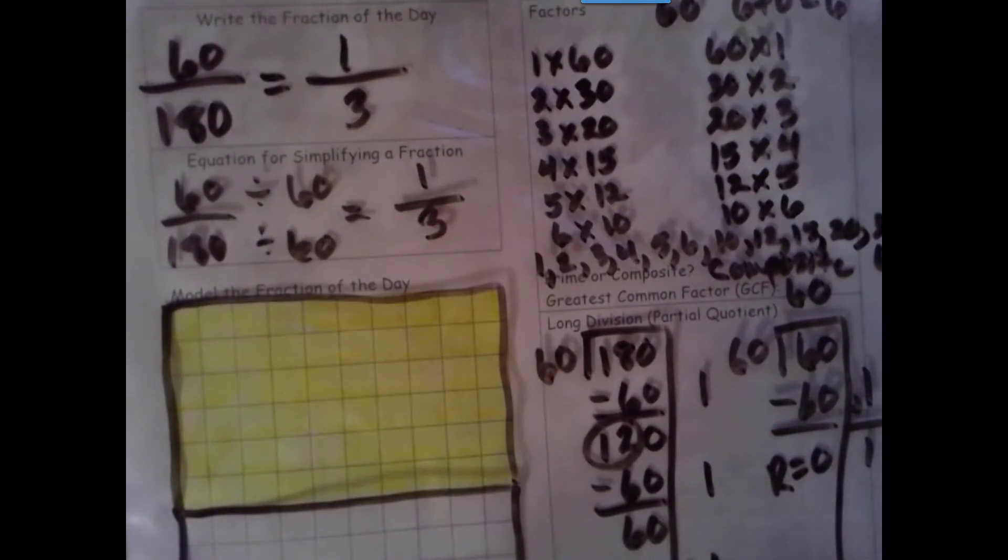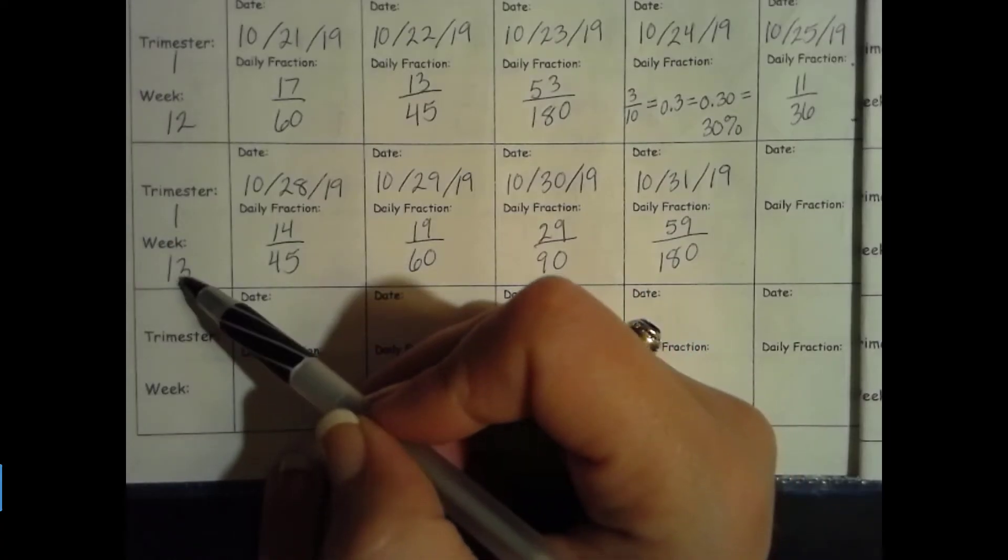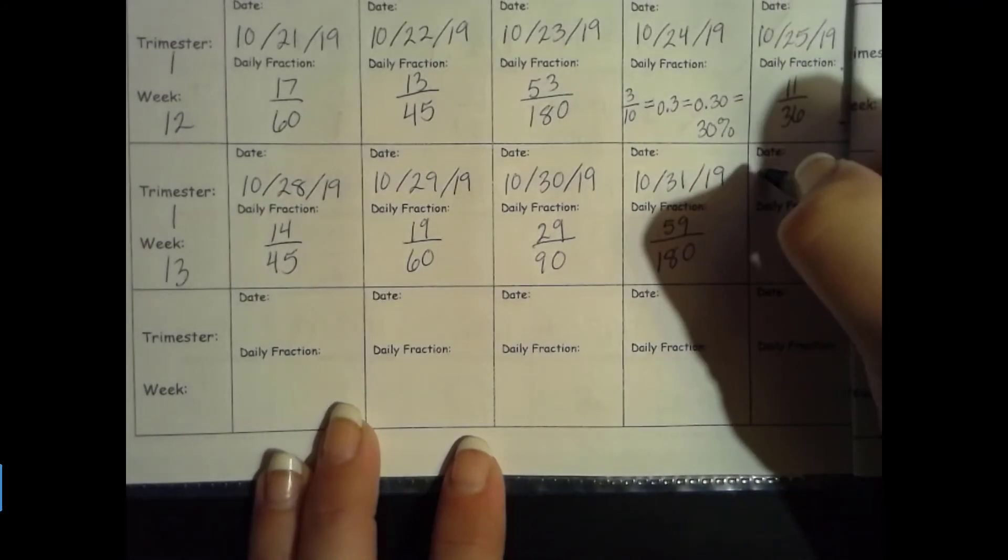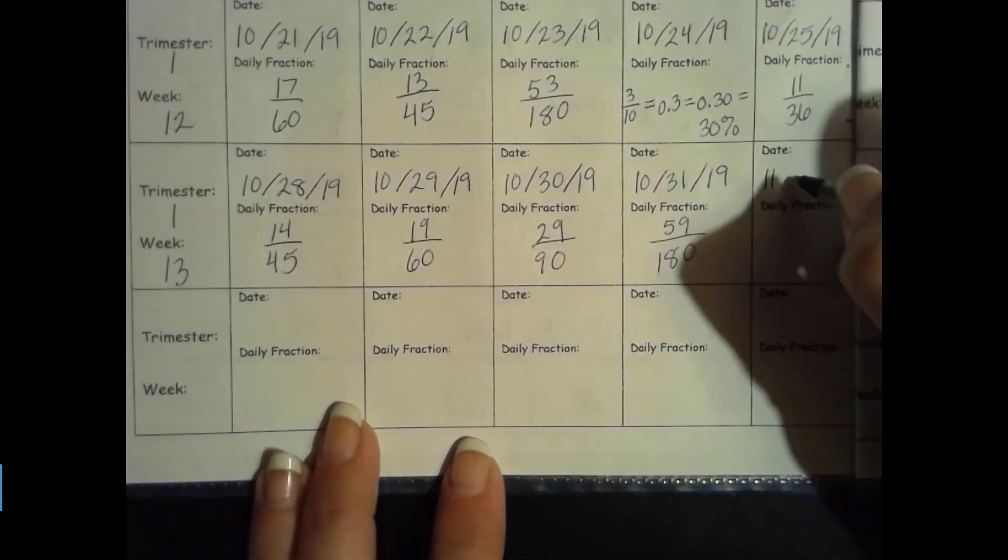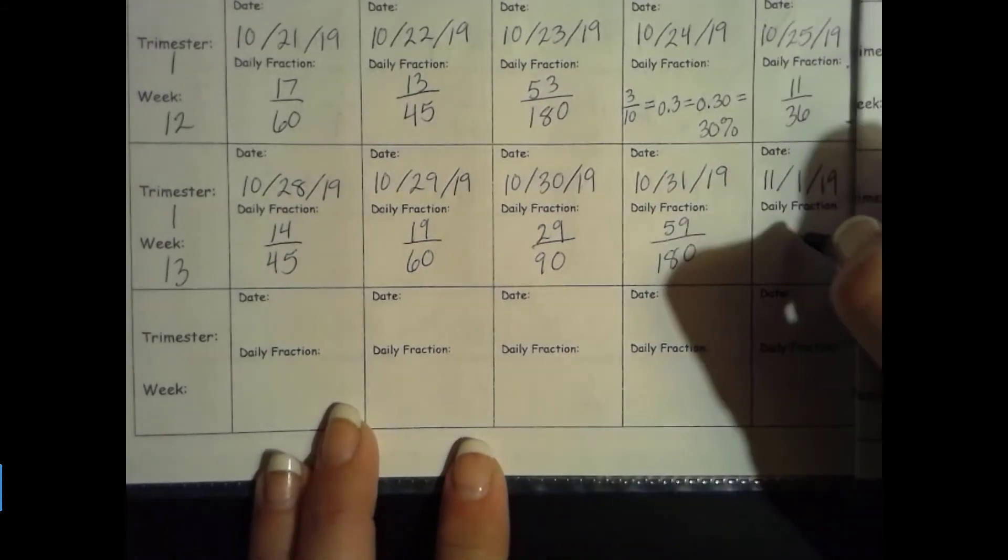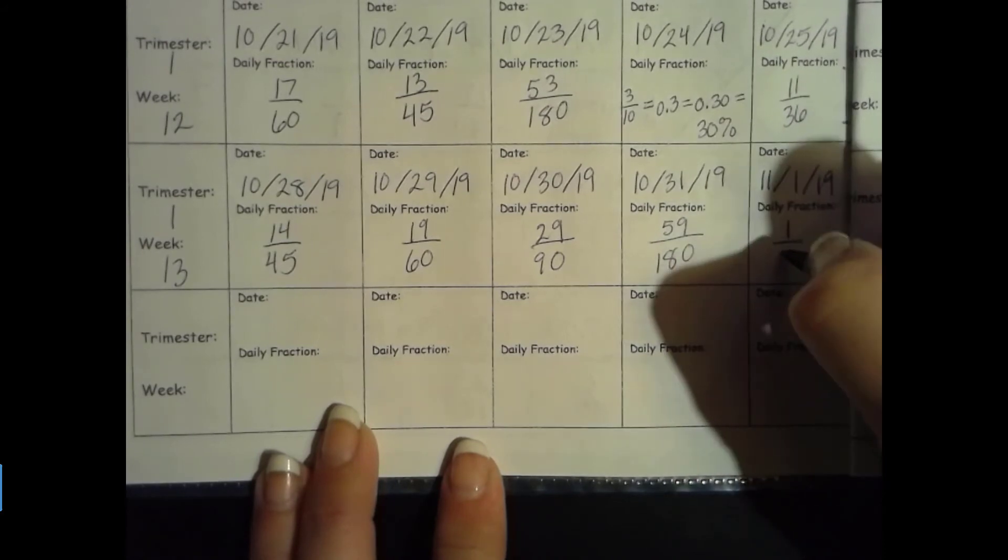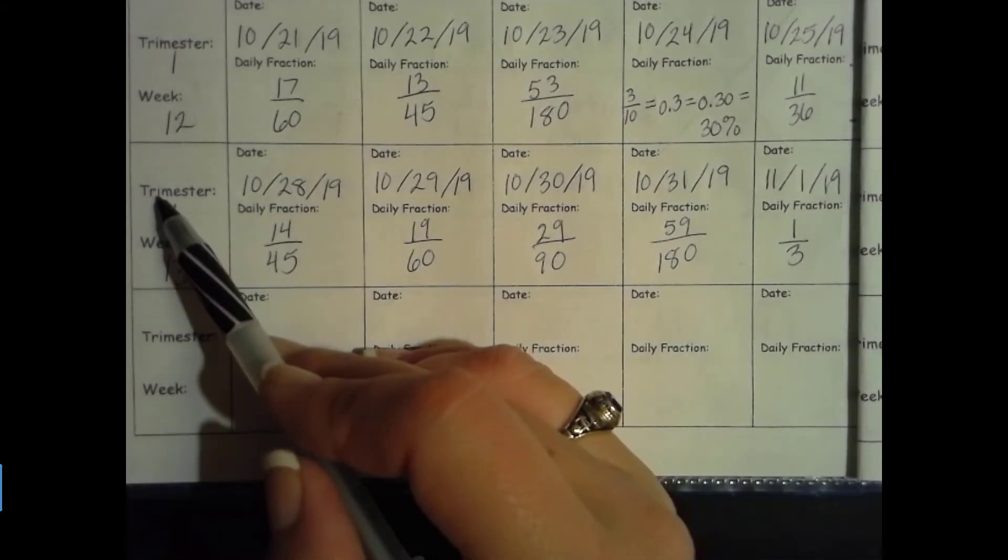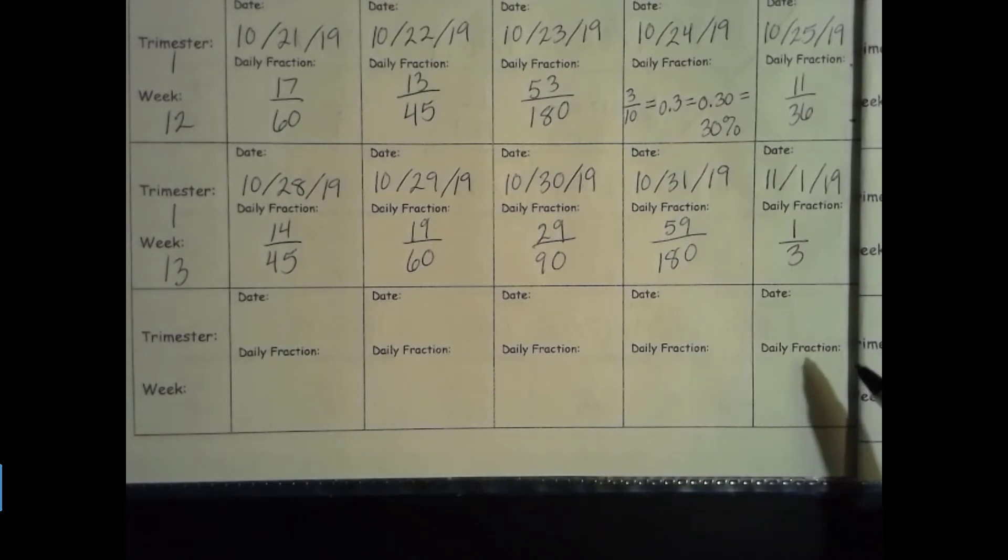Let's go ahead and fill in our data collection page. Trimester one, week 13. This is the very last day of our trimester. Today is 11/1/19, and our fraction for today is one-third. And that's perfect because trimester, tri means three. So we've completed one out of three sections of the year, so it's perfect that it's one-third on the last day of our trimester.